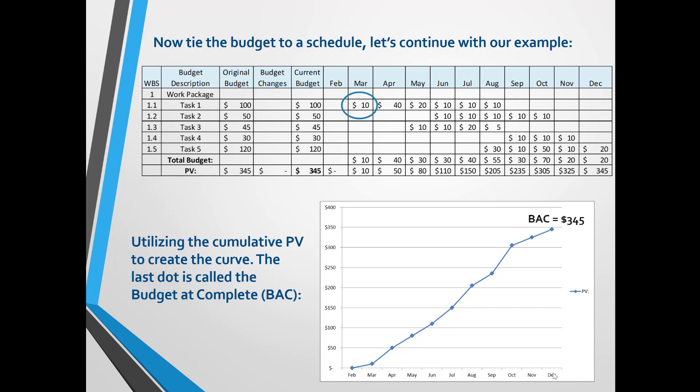The materials should arrive in April, so the cost of the materials is $40. Using this logic, place how the current budget will be spent each month — basically the total amount estimated to be spent in a given month based on the work to perform. As you do this, the planned value total is spread out, and the cumulative budget amounts become the Budget at Complete for each month, otherwise known as BAC.